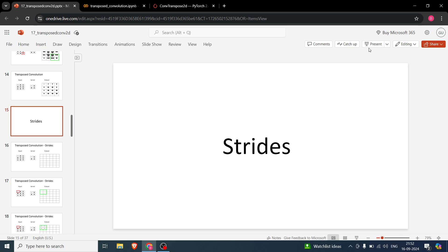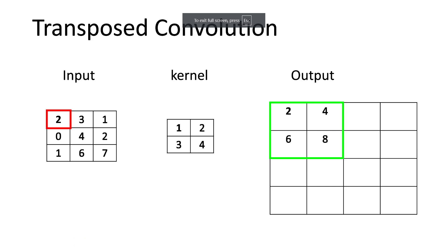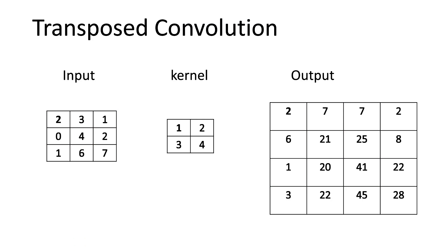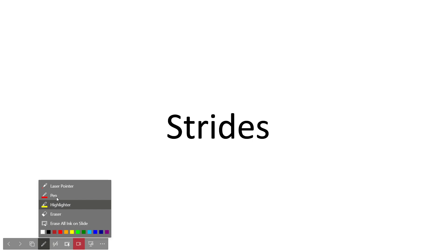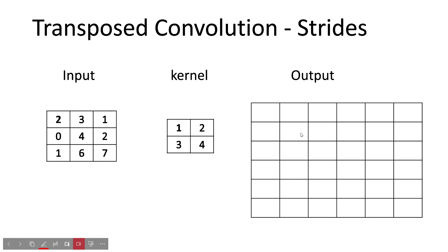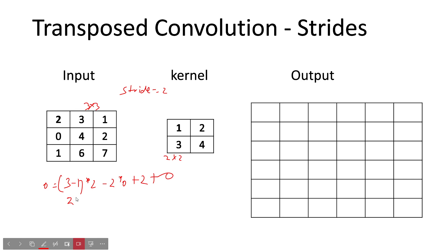Now let's talk about strides. With stride=2, let's compute the output size. Input is still 3×3: (3−1) × 2 − 2 × 0 + 2 + 0 = 2×2 − 0 + 2 = 4 + 2 = 6. So the output becomes 6×6.